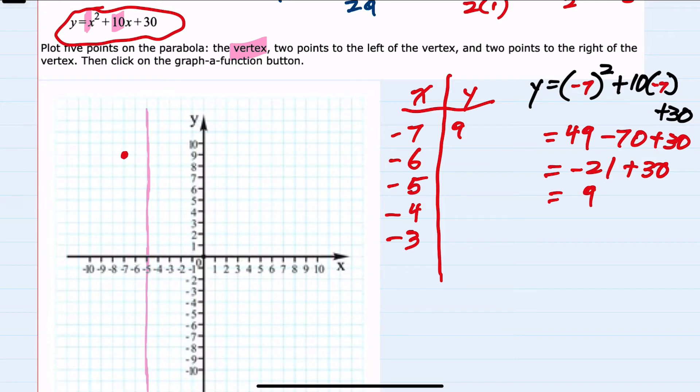And then I'll repeat the process when x equals negative 6. To find the y value, negative 6 squared is a positive 36, 10 times minus 6, minus 60, plus 30. 36 minus 60 is negative 24, plus 30 gives us positive 6. So we have the point negative 6, positive 6.